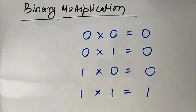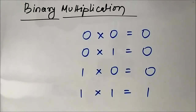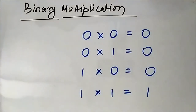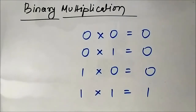It is easy to remember as compared to binary addition and binary subtraction. In binary addition the unique rule was that 1+1 results in 0 with a carry of 1, and in binary subtraction 0−1 gives 1 with a borrow of 1. Those are two unique properties, but in binary multiplication all the rules are the same as normal multiplication — no exception.